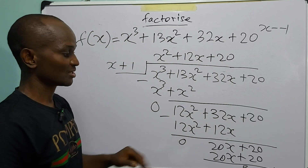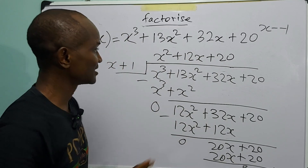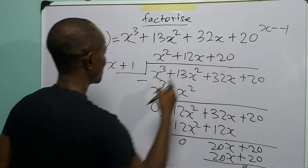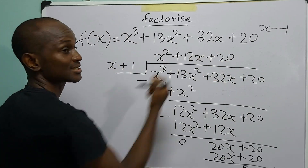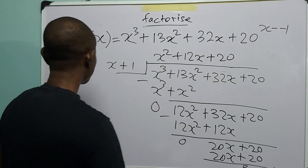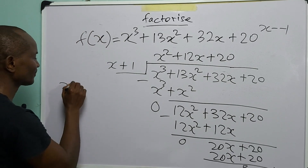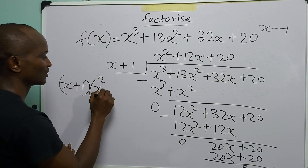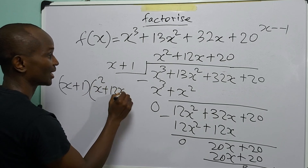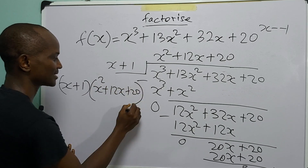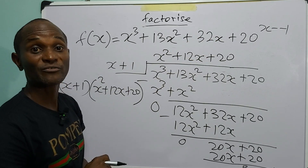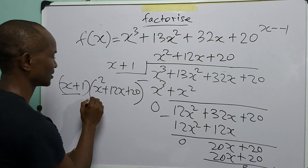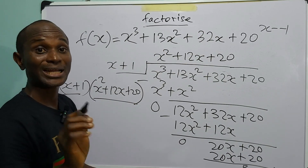After completing the division, the remainder is zero. So this expression divided by (x + 1) equals x² + 12x + 20. This means that x³ + 13x² + 32x + 20 equals (x + 1)(x² + 12x + 20). We have found two factors so far.